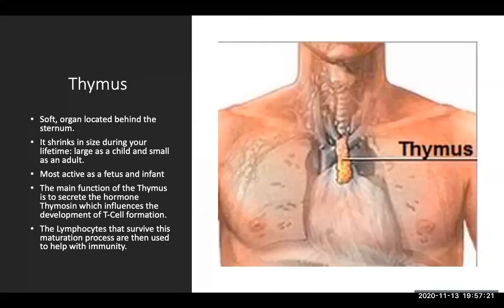The thymus is a soft organ located behind the sternum. It will shrink in size during your lifetime — very large as a child and small as an adult. It's most active as a fetus and an infant. The main function of your thymus is to secrete the hormone thymocin, which will influence the development of T cell formation. Lymphocytes that survive this maturation process will then be used to help with immunity.